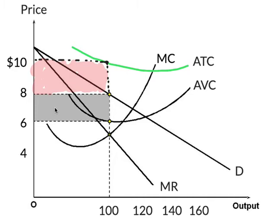So the economic losses would actually be ten dollars minus six, which would be four times a hundred units, four hundred dollars. So which would we rather lose? Two hundred dollars in the short run by producing or four hundred dollars by shutting down.